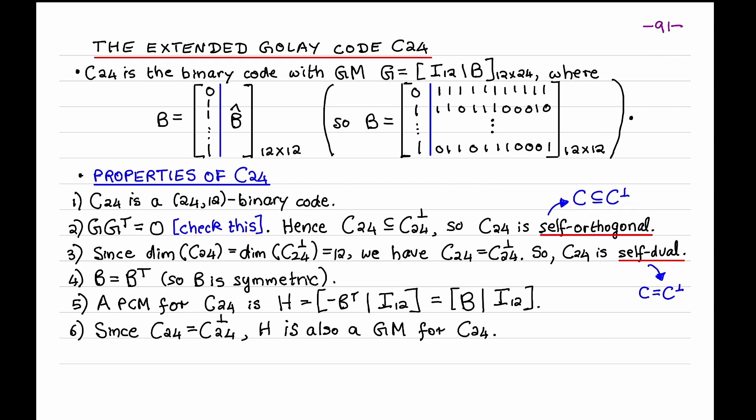Furthermore, since C24 and C24-perp both have dimension 12, these codes must be equal to each other. So C24 is an example of a self-dual code. More generally, the code is said to be self-dual if the code equals its dual. You can also check that the matrix B is symmetric. For example, the first row of B is 0 followed by 11 ones. And this is also the first column of B. Now we can derive a PCM for C24 from G, since G is in standard form. And this PCM is minus B transpose with a 12 by 12 identity matrix on its right. The minus sign is irrelevant because this is a binary code over GF2. And B transpose is B as we just noted. So this is a PCM for C24 that you get by swapping the two halves of G.